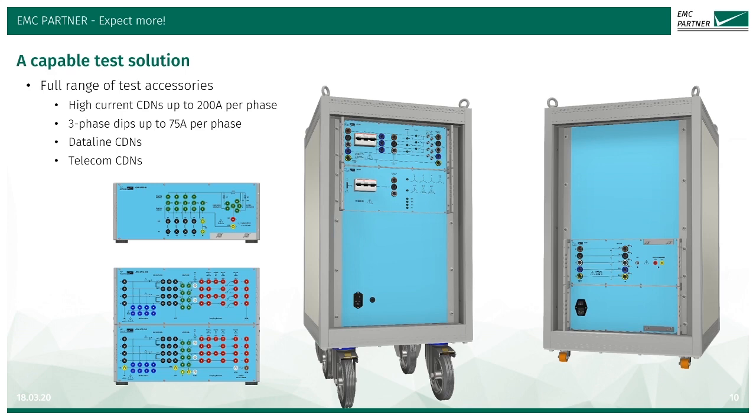The IMU generators are the heart of a larger test system. They can be expanded by the addition of 3-phase CDNs, coupling-decoupling networks, up to 200 Amperes and 1500 Volts DC. We can also add 3-phase Dips and interrupts testing to these generators, up to 75 Amps per phase.